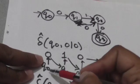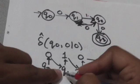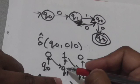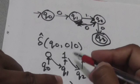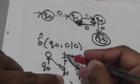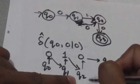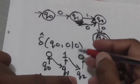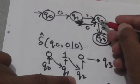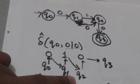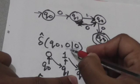The present state is q0. First it will read the first input symbol of this string, that is 0. After reading 0, when the machine is in state q0, it will jump to state q1. Now it has to read the second input symbol, which is 1. After reading 1, it will jump from state q1 to state q2. Now it has to read the third symbol, which is 0.